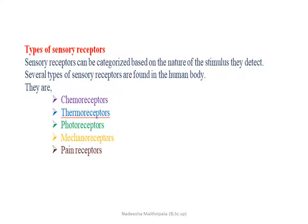Sensory receptors can be categorized based on the nature of the stimulus they detect. The types of sensory receptors found in the human body are: chemoreceptors, thermoreceptors, photoreceptors, mechanoreceptors, and pain receptors.